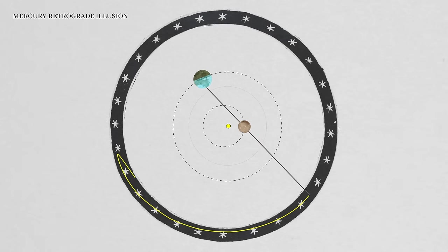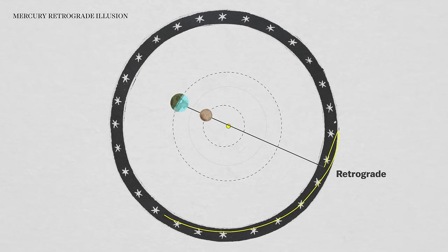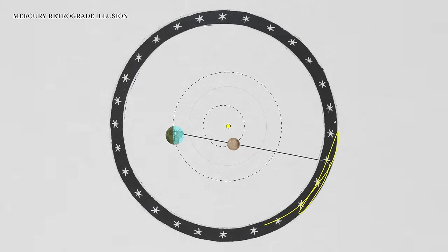It's simply a function of two objects orbiting in the same direction at different speeds. If you stood on Mercury, you would see Earth make an apparent loop, too.